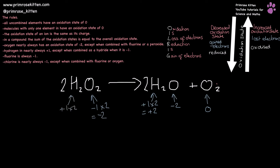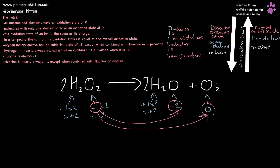Hydrogen is plus one; there are two of them, that gives an overall contribution of plus two. So if we look at what has changed oxidation state, oxygen has gone from minus one to minus two and zero. When it goes from minus one to minus two it is decreasing its oxidation state, it is gaining electrons, so it has been reduced. When it goes from minus one to zero it is increasing its oxidation state, it has lost electrons, so it is being oxidized. So oxygen has been both reduced and oxidized — this is a disproportionation reaction.